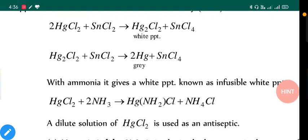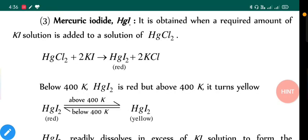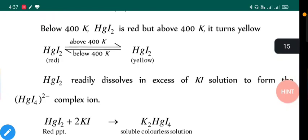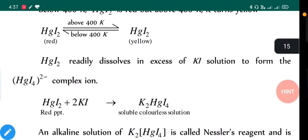Next one, mercury iodide. It can be obtained when HgCl₂ reacts with potassium iodide and gives HgI₂. Below 400 Kelvin, HgI₂ is red, but above 400 Kelvin it turns yellow. Again, same thing, it depends on particle size and it is interconvertible. HgI₂ readily dissolves in excess of KI solution to form HgI₄²⁻, which is a complex compound which will be neutralized by potassium.